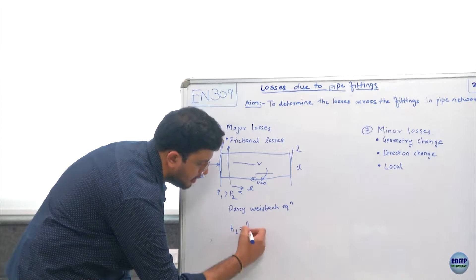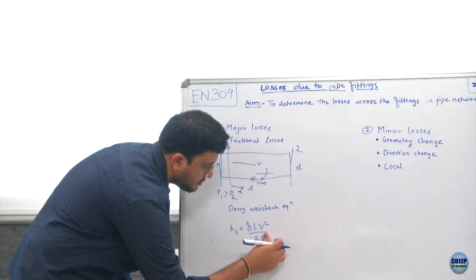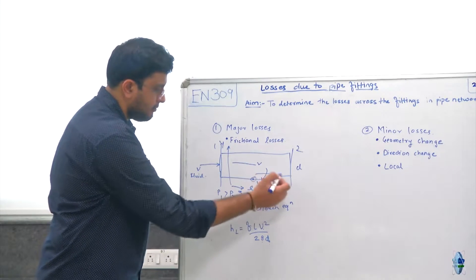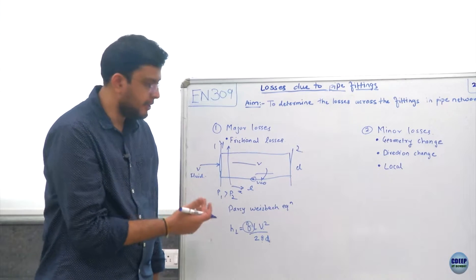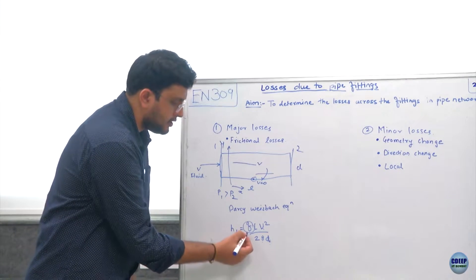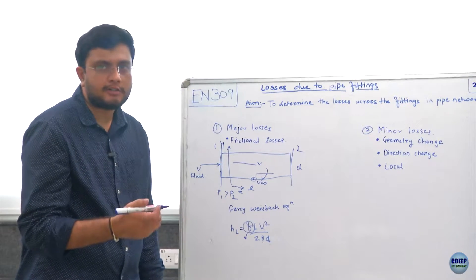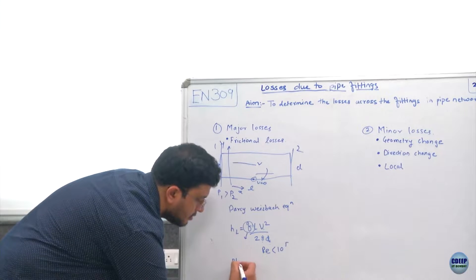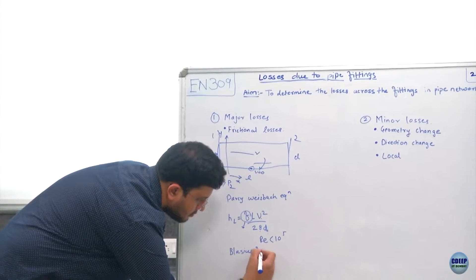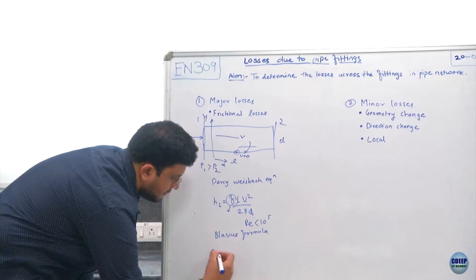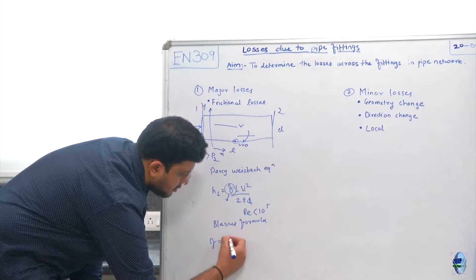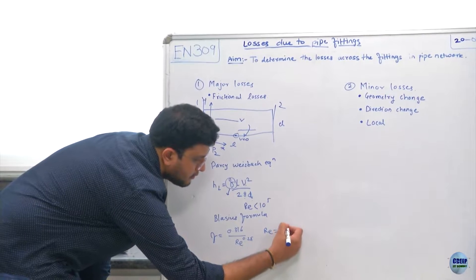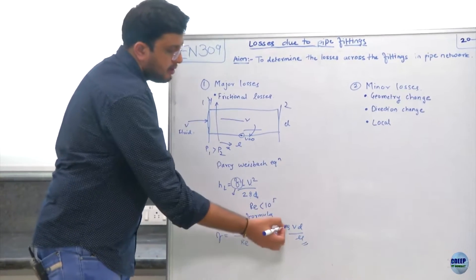The Darcy-Weisbach equation is: HL = f·L·V² / (2g·D), where D is the diameter of the pipe, g is the gravitational constant, V is the average velocity, L is the length of pipe, and f is the friction factor which depends on the nature of the fluid and how it interacts with the pipe. For flow conditions where Reynolds number Re < 10⁵, the friction factor is empirically given by the Blasius formula: f = 0.316 / Re^0.25, where Re = ρVD/μ, μ is dynamic viscosity and ρ is density.